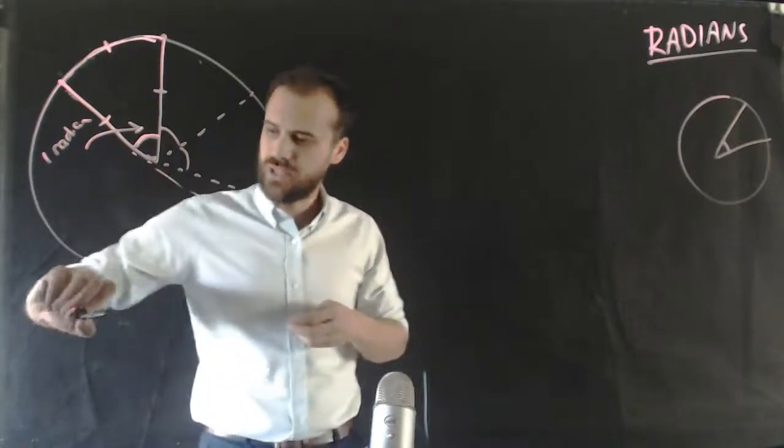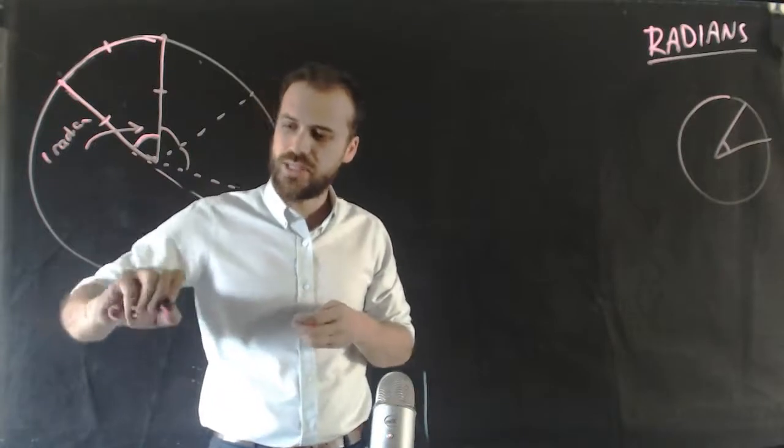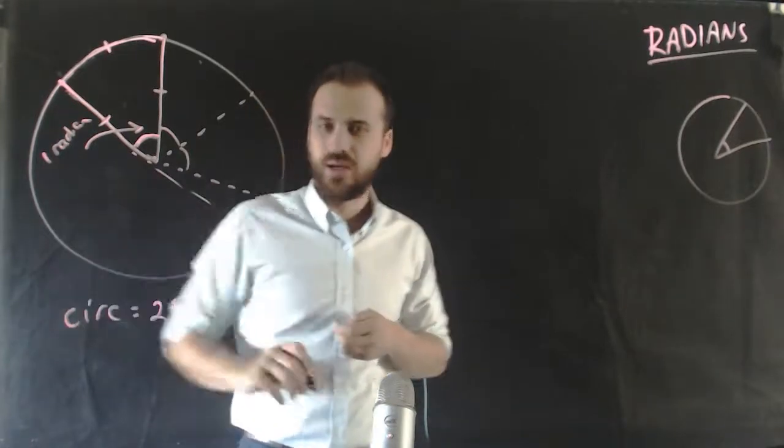You'll remember that the circumference of a circle is equal to 2 pi r.